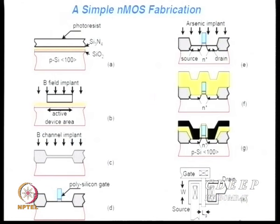Photoresist is like the emulsion on a photo film — it's like a resistor. When you shine light through some object, the light does not pass through the object, and the rest of the material receives light. There are two kinds of resist: negative and positive.